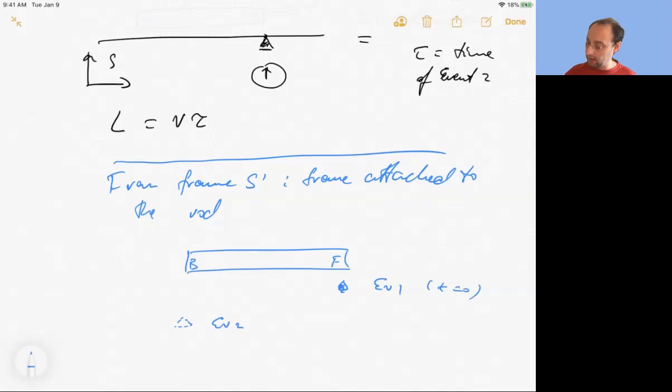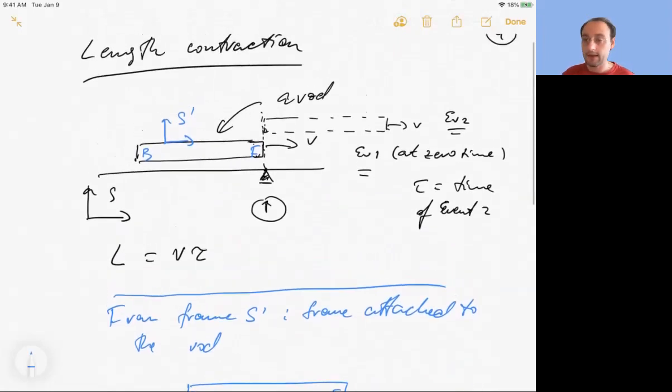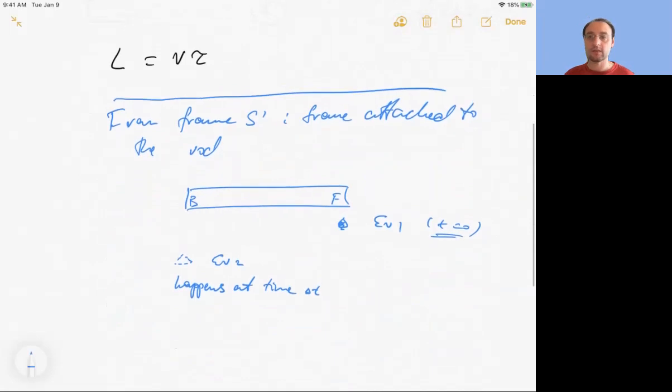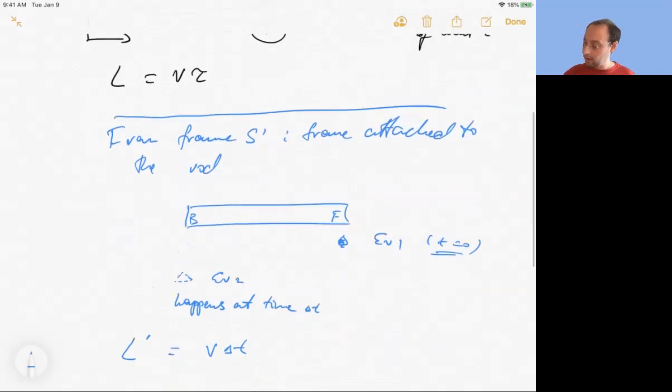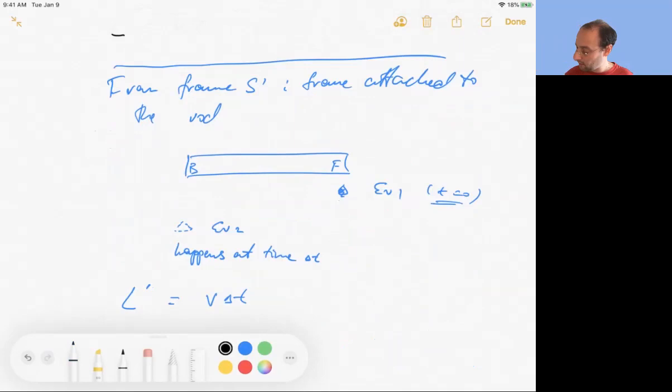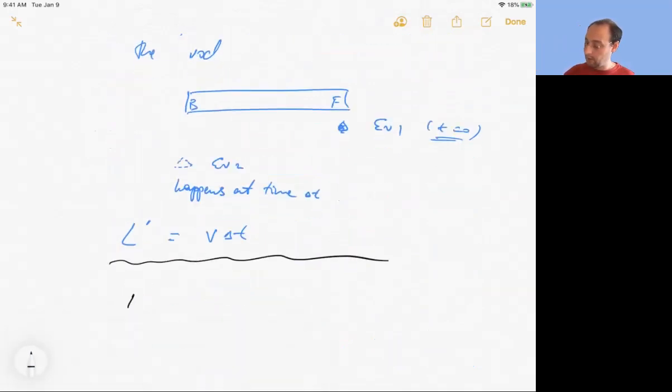And they can say also t equals zero at event one. And so event two happens at time delta t. It happens delta t later. So I don't actually have to set this to zero. I can just look at time intervals. It's not necessary to set this time to zero, but okay. So they measure time difference delta t between the same pair of events. Mark passes the front of the rod and mark passes the back of the rod. And so they would say that length, let's call L prime, equals V times delta t. The speed of the mark relative to them is the speed of the rod, the same as the speed of the rod relative to frame s.